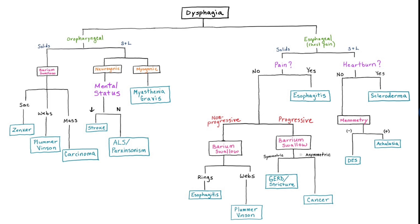If there's no acute pain or no pain at all, check whether the patient's symptoms have progressed from solids only to also liquids — that's what we mean by progressive. If this is the case, a barium swallow will help us distinguish between GERD or stricture, which both have symmetrical narrowing, or a carcinoma, which again will show an asymmetrical growth. If there's no acute pain and the symptoms have not been progressive, then a barium swallow will distinguish between a less painful type of esophagitis such as eosinophilic, which will present as rings constricting the lower esophagus.